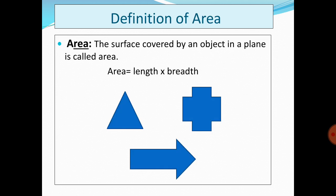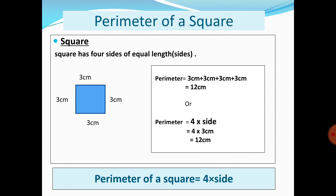Area: the surface covered by an object in a plane is called its area. In these shapes, the colored part is called its area. Area is equal to length multiplied by breadth.